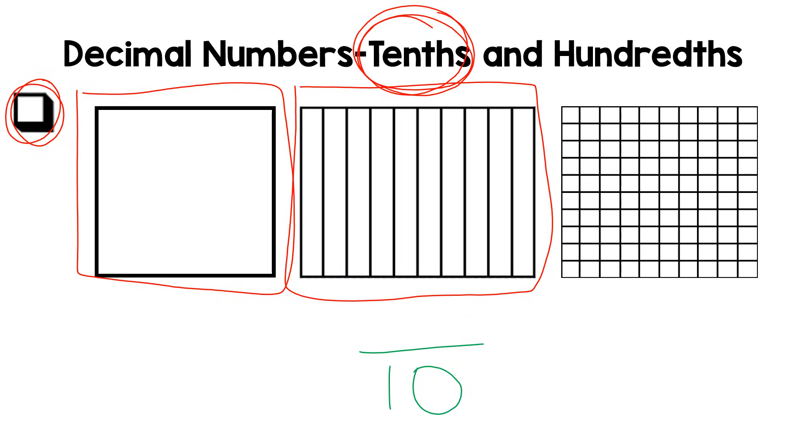This square is one whole square, but it is split up into 100 equal pieces. That's why it's called hundredths, and in fractions the denominator is one hundred. One hundred equal parts.